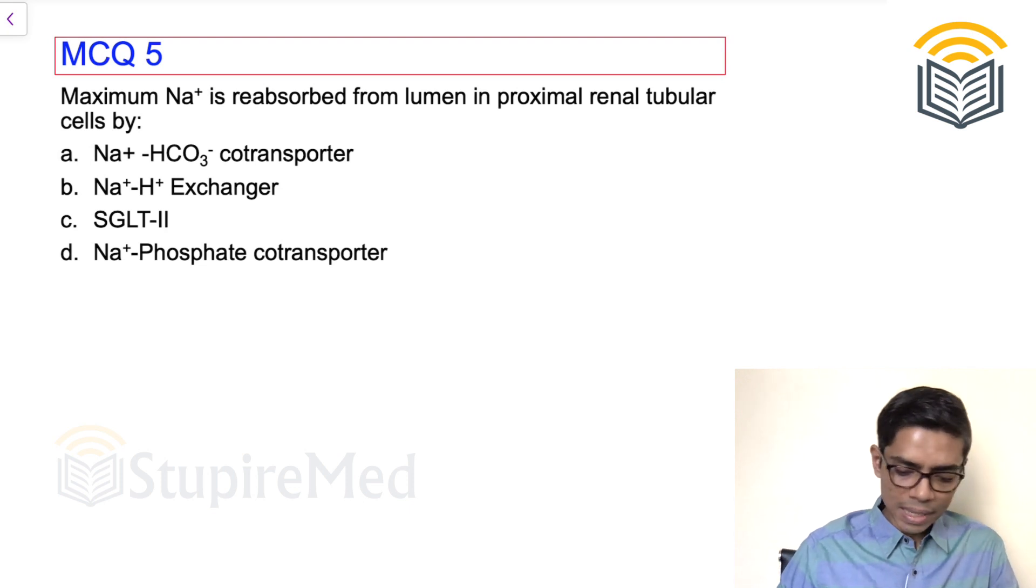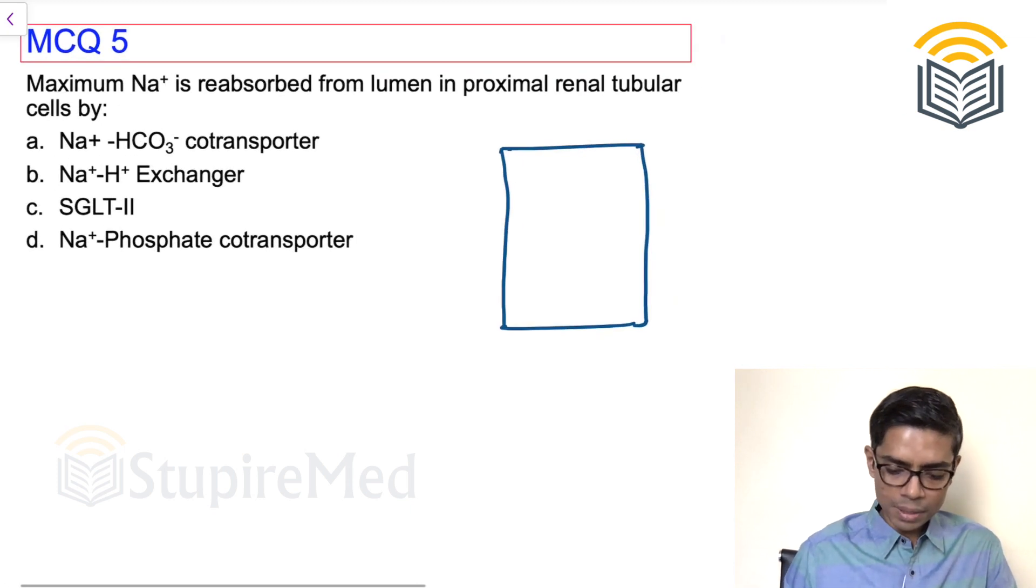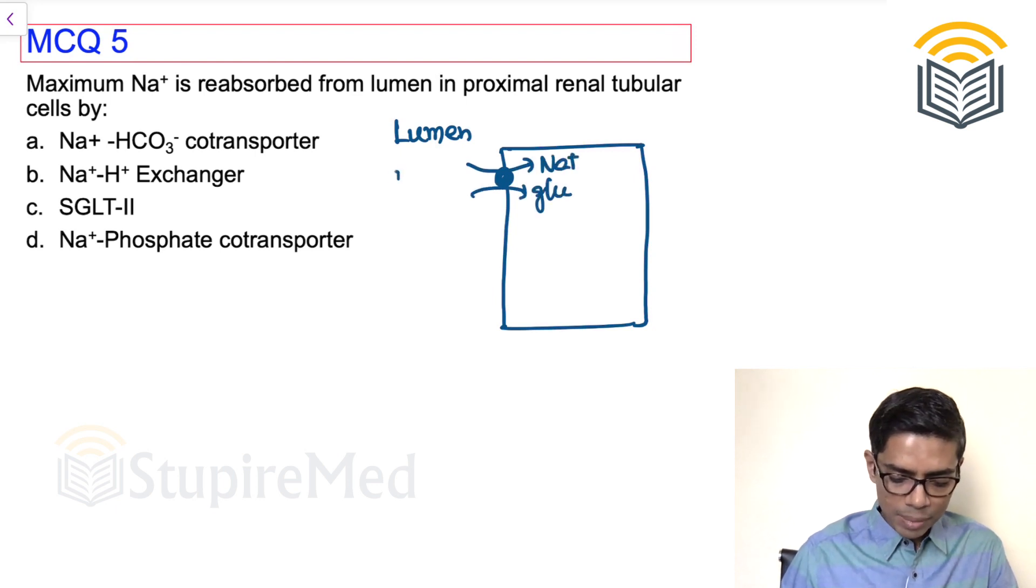Please remember that at the level of proximal tubules from the lumen there are three major groups of transporter. One is transporting sodium along with glucose. This is nothing but SGLT.